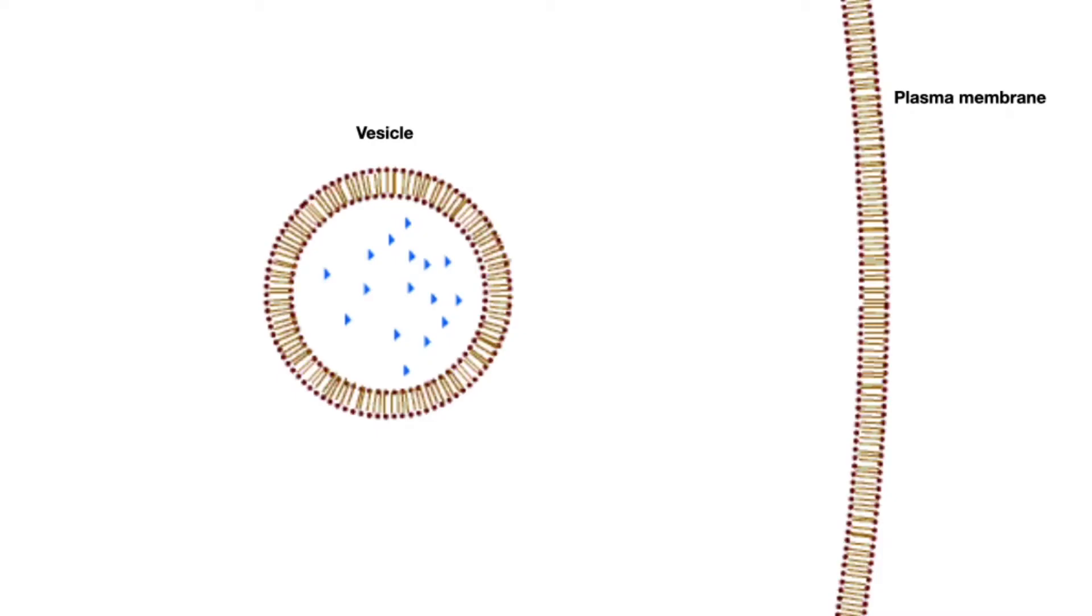Another thing you need to know is that the membranes surrounding the organelles inside the cell are also made of a phospholipid bilayer. For example, let's take a look at this vesicle. This vesicle comes from the Golgi body and it is carrying a cell product that was produced at the endoplasmic reticulum, packaged into a vesicle there, and then sent to the Golgi body where it was finished and repackaged into another vesicle.